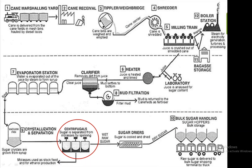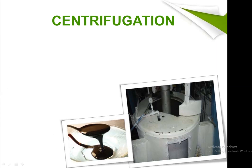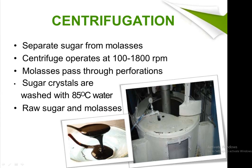After crystallization, the next step is centrifugation, where sugar is separated from molasses. Centrifuges operating at 1000 to 1800 RPM are used. Molasses passes through perforations and sugar crystals are washed with steam or water at 85 degrees Celsius. As a result, raw sugar and molasses are obtained. Molasses is a thick side product.